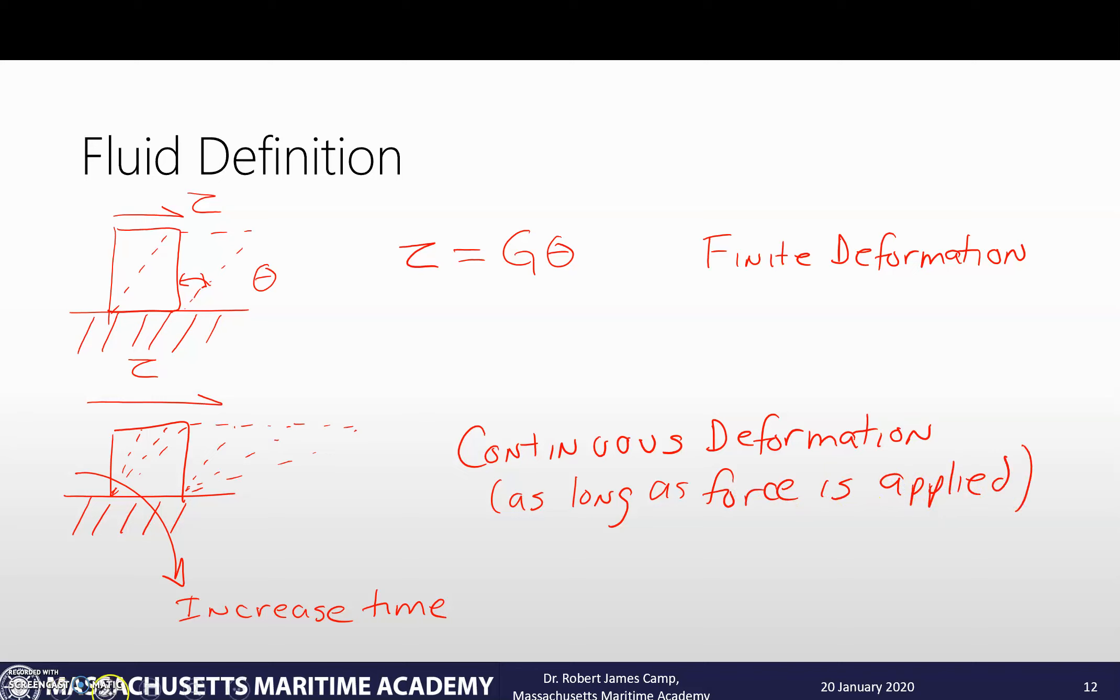And so this is what we get into, the big definition between - let me change this because I notice that it's in red, and that's probably not the best thing. So as long as we're applying a force, we're going to have a continuous deformation. And so what that gets us to is the scientific definition of what a fluid is. That basically comes down to: a solid can resist shear. Basically, a fluid is a phase of matter that cannot resist shear forces.